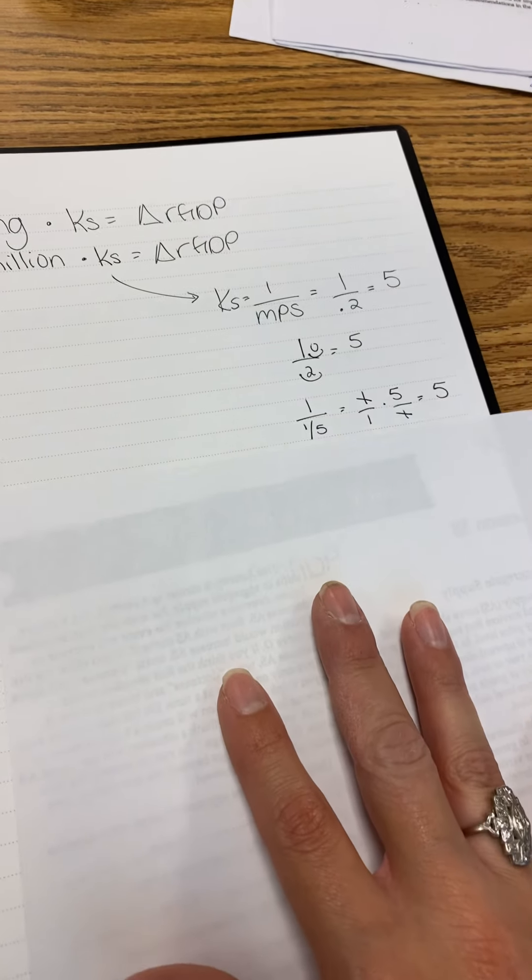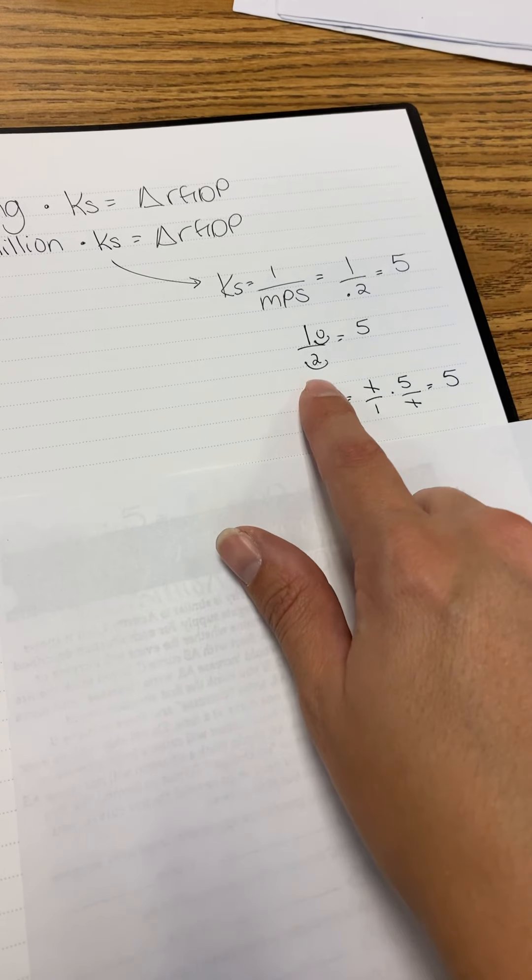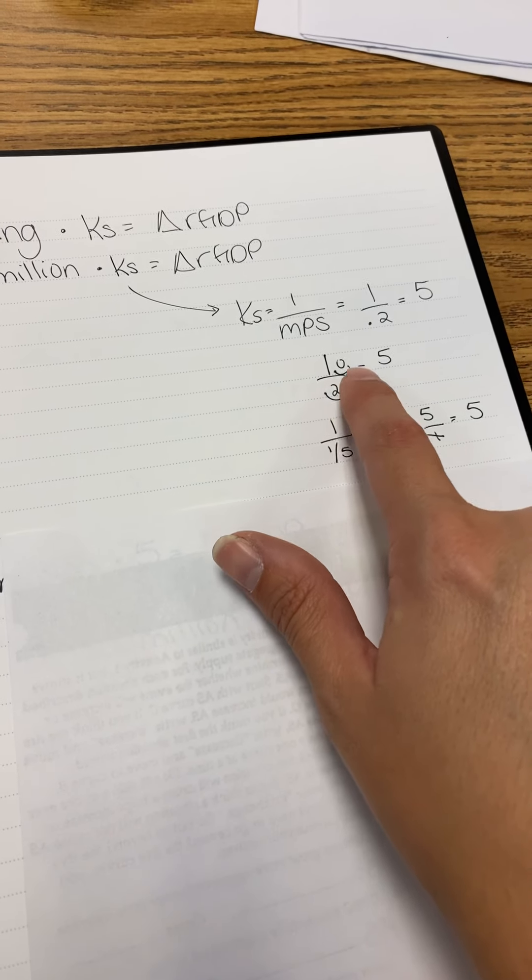You can think of that in lots of different ways. Maybe it is moving a decimal place over, making that a 10 and a 2.